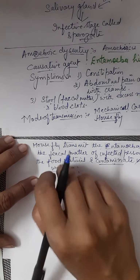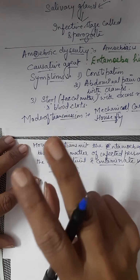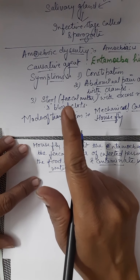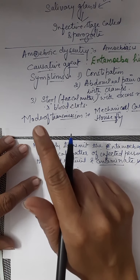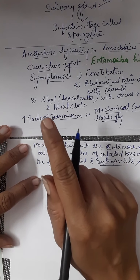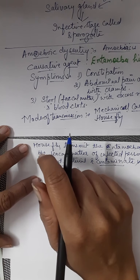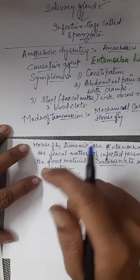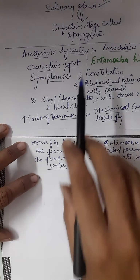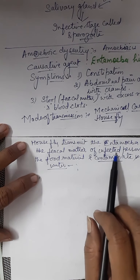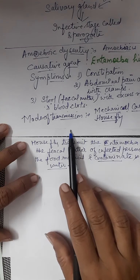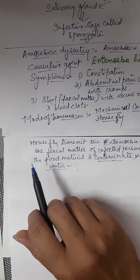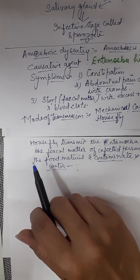In this video, we covered two diseases caused by protozoa: one is malaria, and the second is amoebiasis. Malaria is a deadly disease, but nowadays it is curable. It can be cured by quinine, which is obtained from the cinchona tree, along with various other drugs. Amoebiasis is caused by the intake of contaminated food or water containing Entamoeba histolytica. In the next video, we will talk about diseases caused by Ascaris, or roundworm. Thank you.